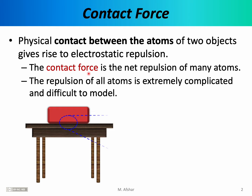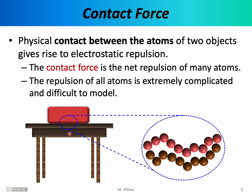If we wanted to really understand and calculate the contact force, we would have to zoom in on the individual atoms or molecules of the box and the table and see how they are interacting. These interactions are very complicated, in part because there are many atoms involved, but also because those atoms are not arranged along a perfectly flat surface. Although the surface of a table might be smooth to the touch, individual atoms are sensitive to nanometer variations in height, so the forces could be pointing left, right, upwards, or even downwards. The details are extremely complicated and difficult to model.